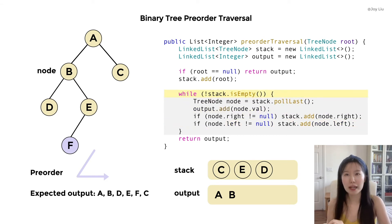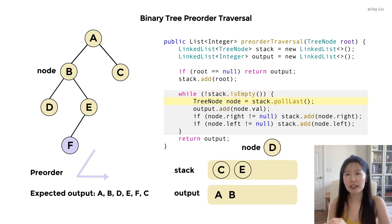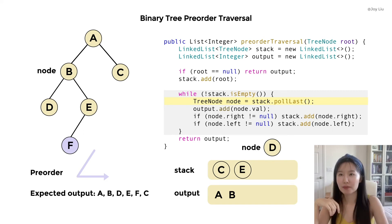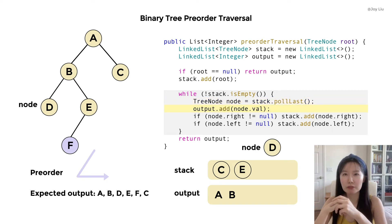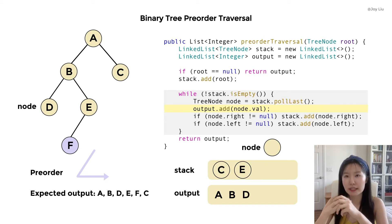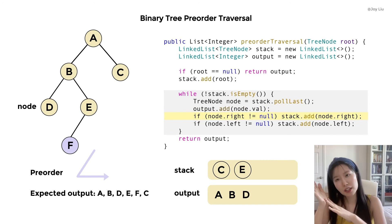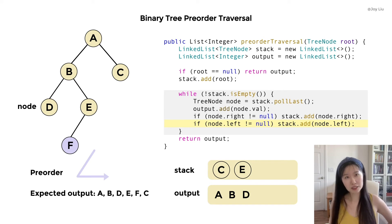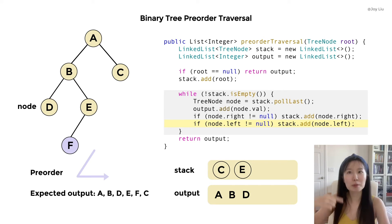Let's look back again and check the stack — it's not empty. We pull the last element out and delete it from the stack. We name it as node. Now node switches from B to D. We get the value of the node and add it to the output. Check the right child — nope. Check the left child — nope. It's a leaf, so nothing is added to the stack.